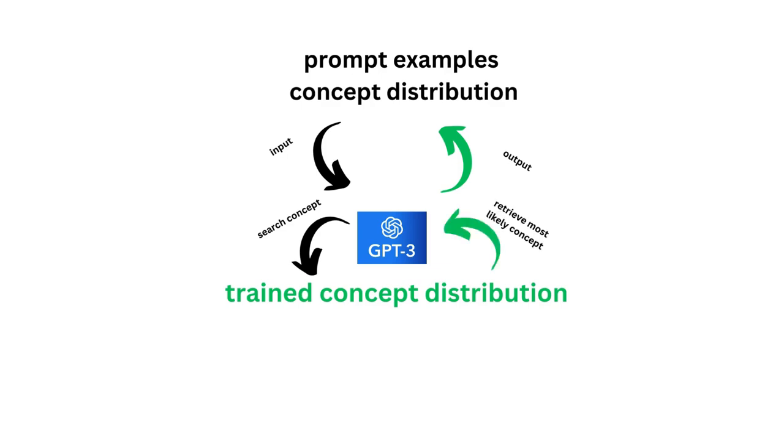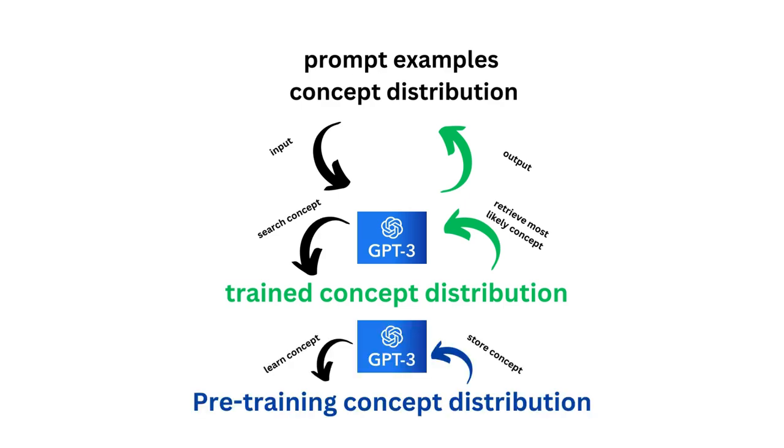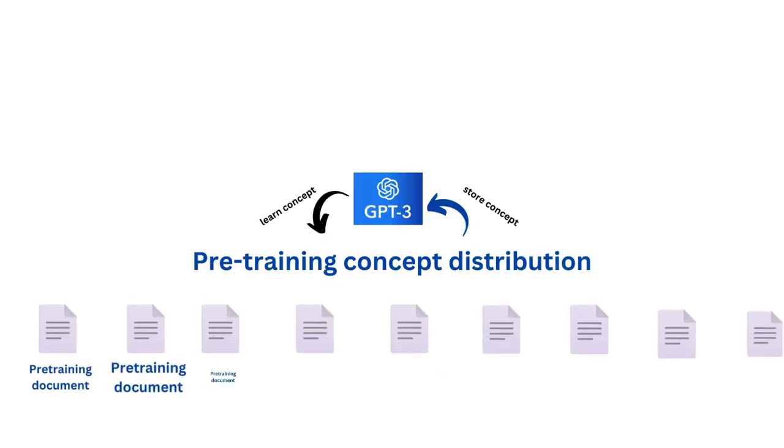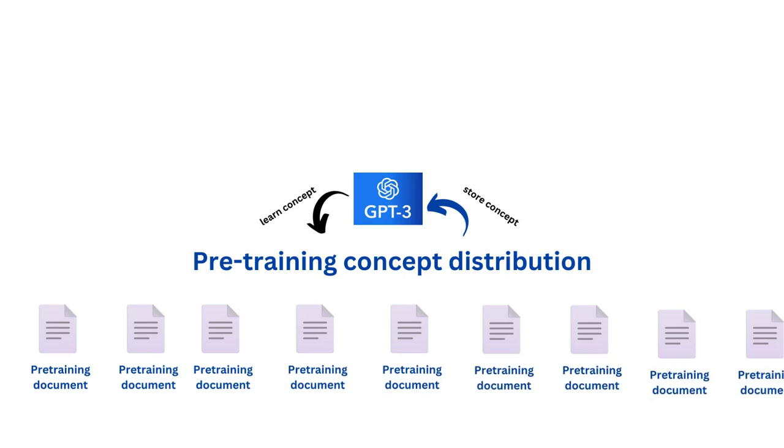The knowledge of all these latent concepts come from the pre-training data concept distribution where the model learned and stored them somewhat in its weight. Now, that pre-training concept distribution is built up of many, many documents, billions in the case of GPT-3. These documents could be seen as being generated from latent core concepts.